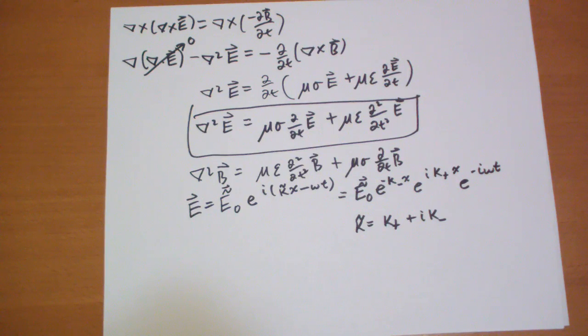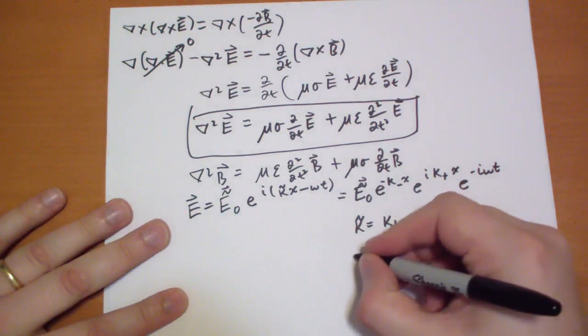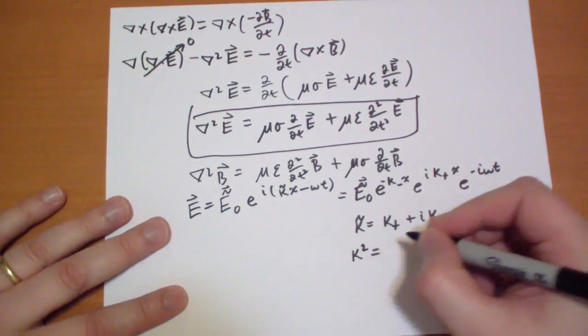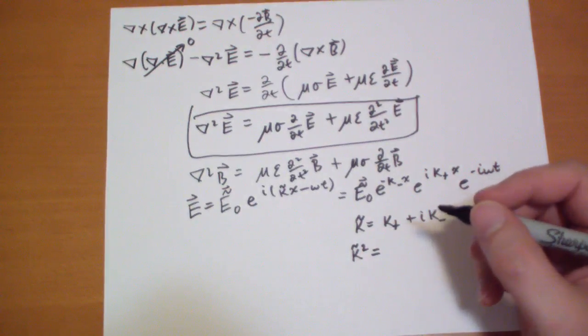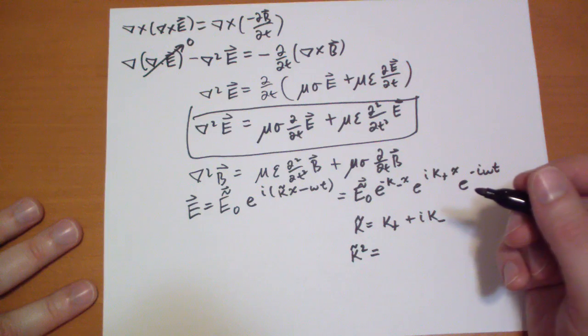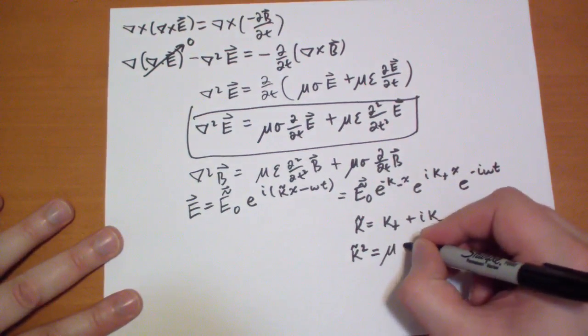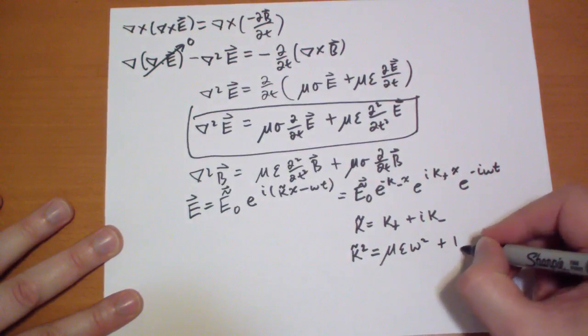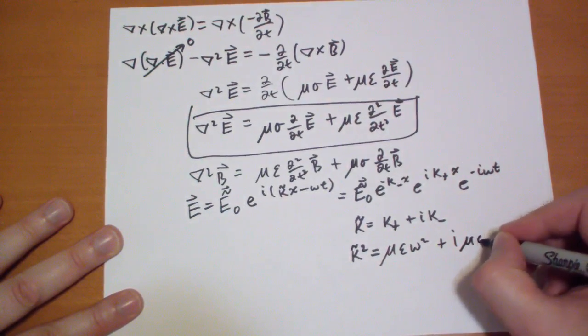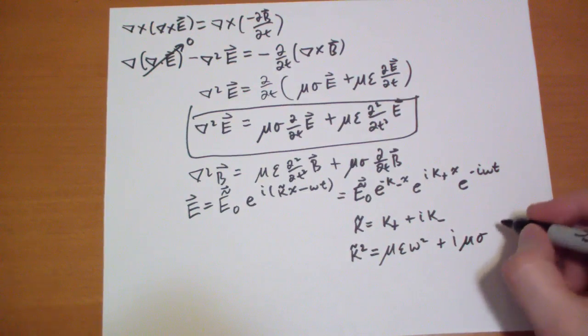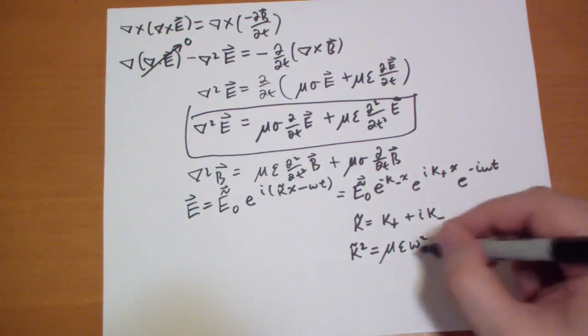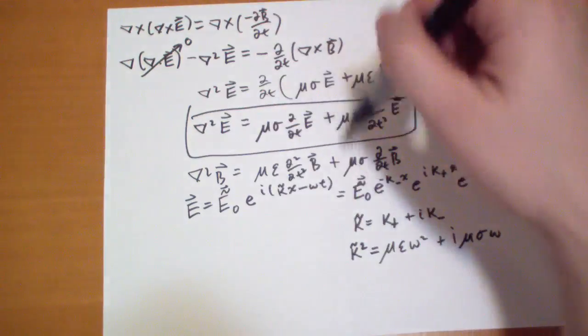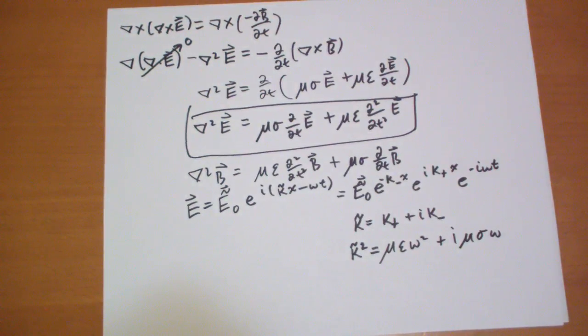must equal well it doesn't really matter does it mu epsilon omega squared plus I mu sigma omega okay? And when you plug this in to these equations up here you're gonna recover the solution it should be rather obvious.